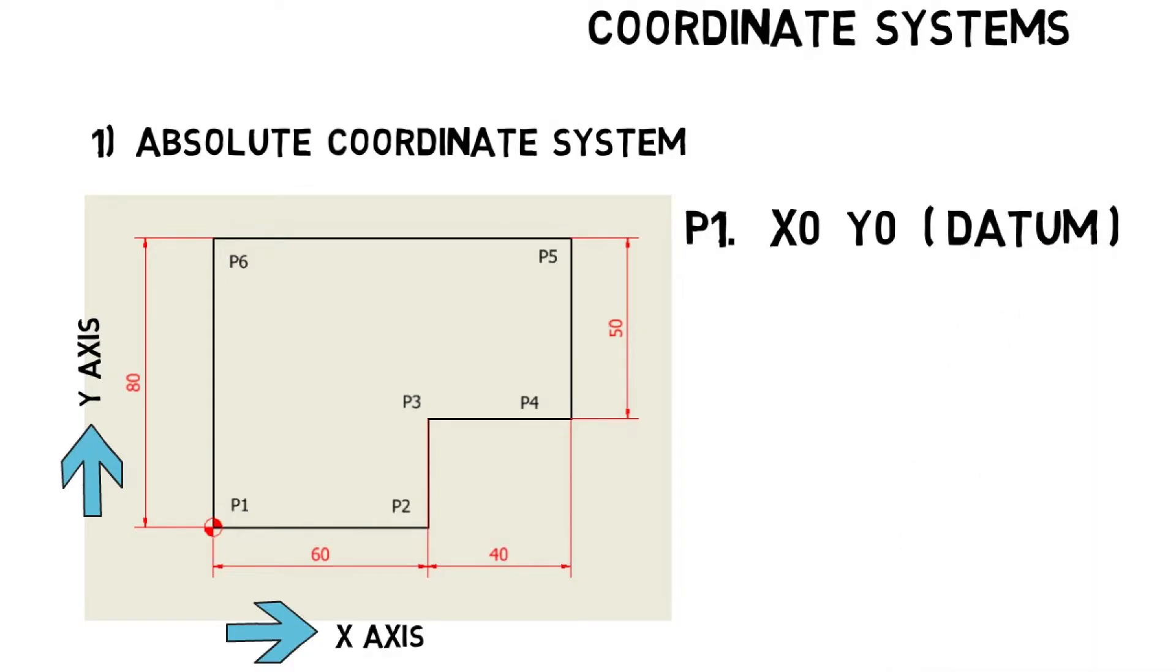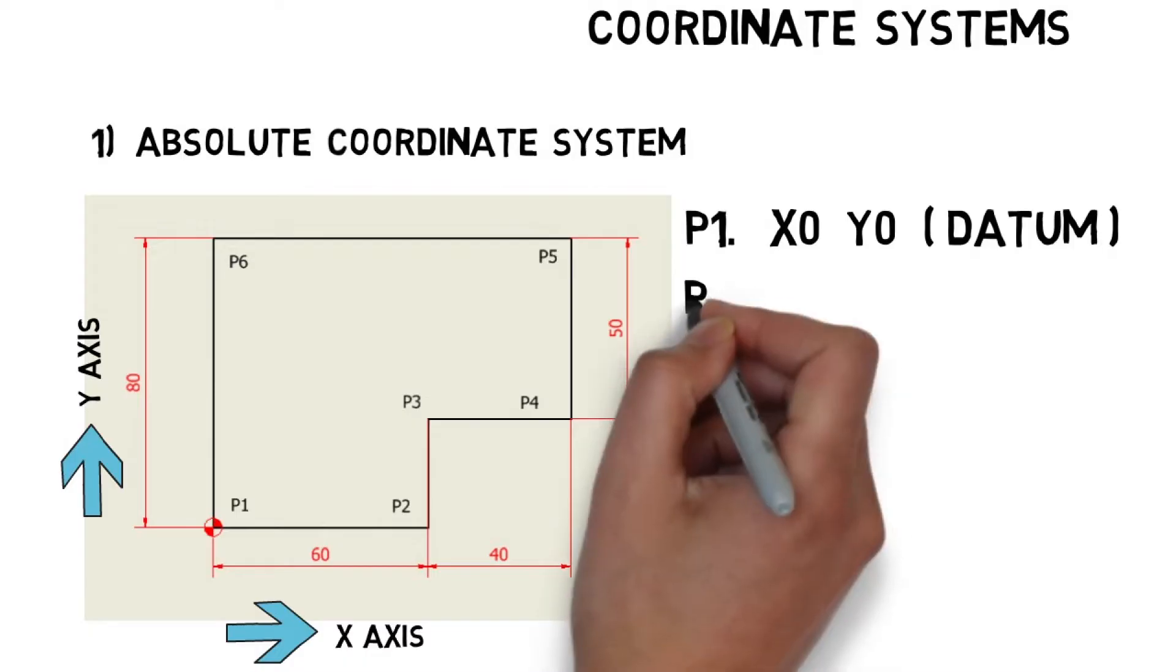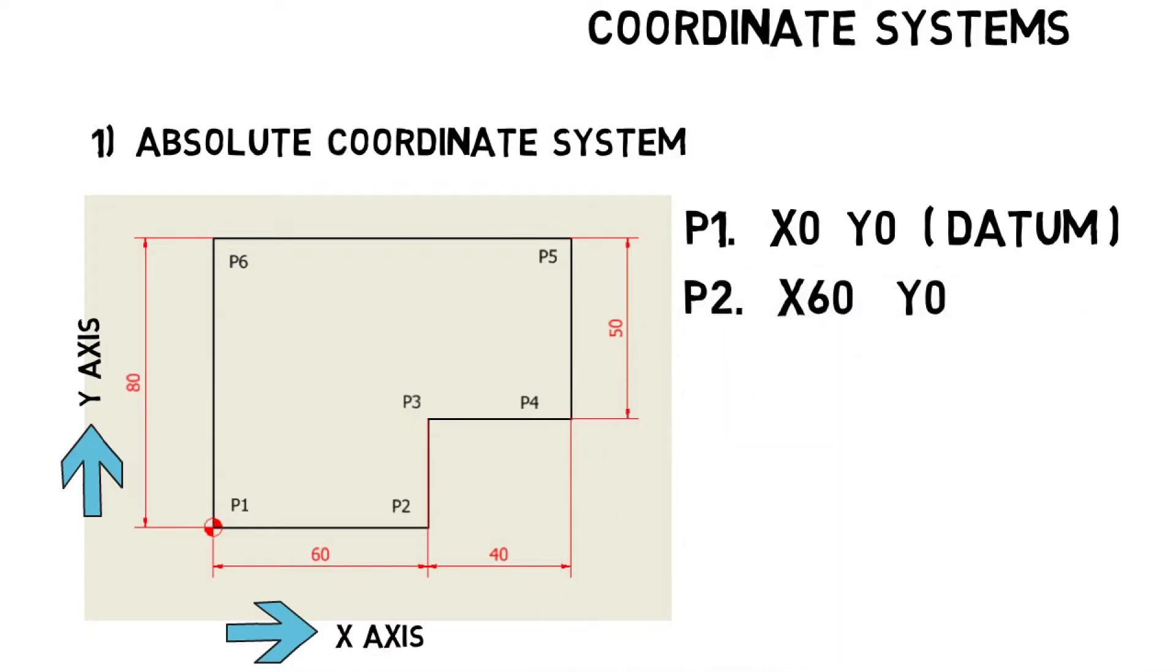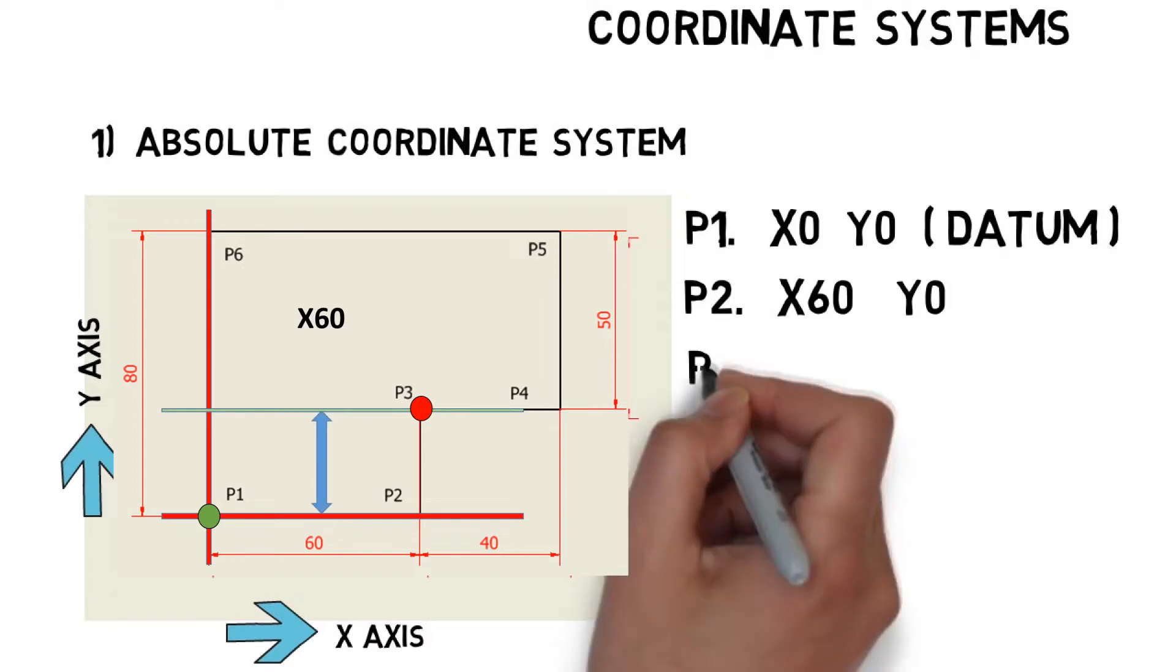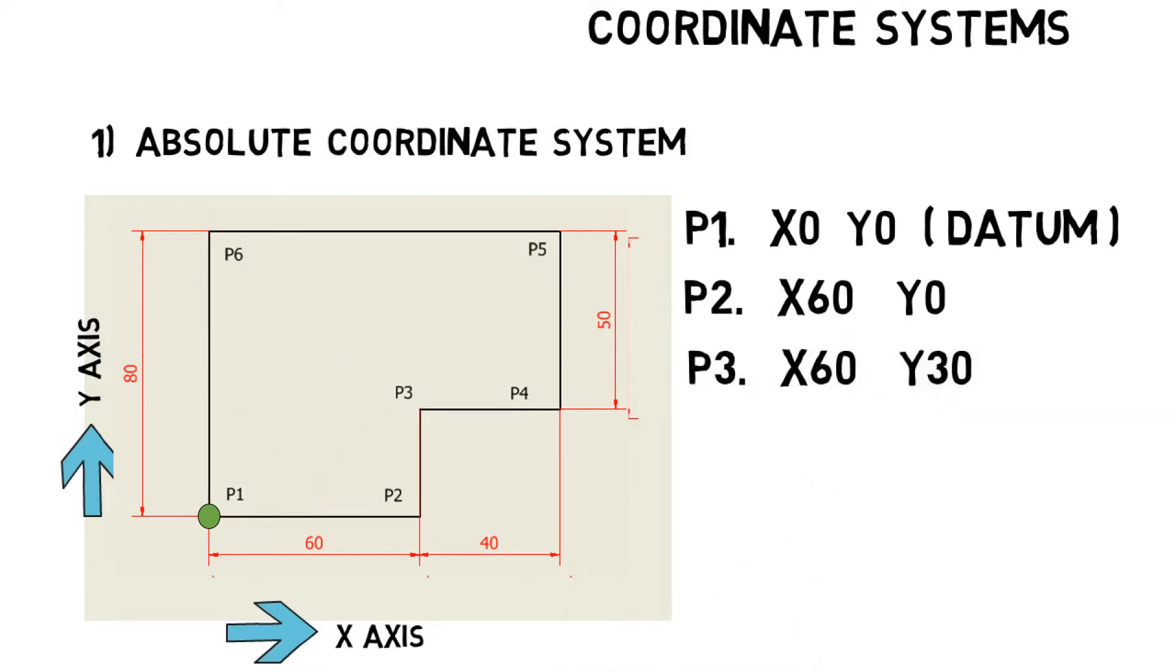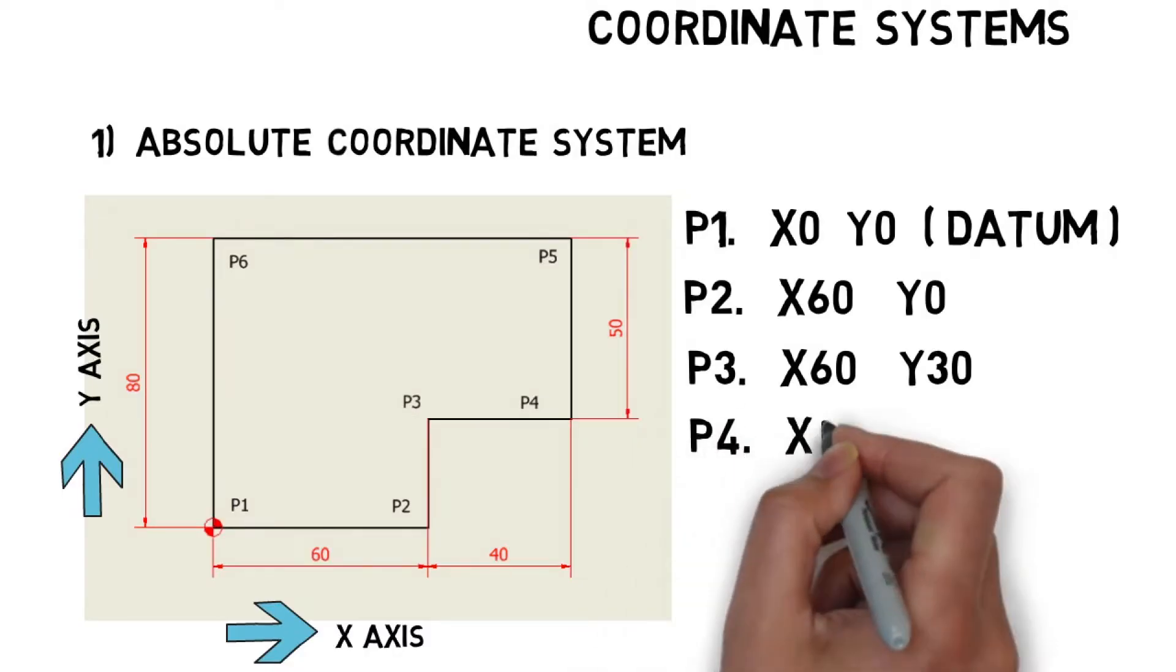In absolute coordinate system, we calculate XY points from fixed origin. Then P2 will be X60 and Y0. Next P3, X distance from the origin is 60 plus 40, so 100. And Y distance is 80 minus 50, so it's 30.